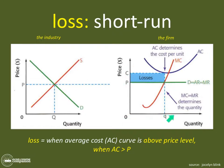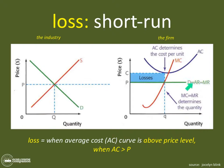If we were drawing this diagram from scratch, we first recognize we are drawing a perfect competition graph. We have our axes, and we first draw our revenue curves — demand, average revenue, and marginal revenue are all equal to one another in perfect competition. If you don't know why, go back and watch some of the earlier videos.